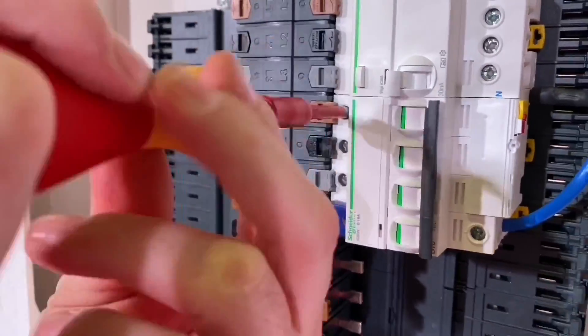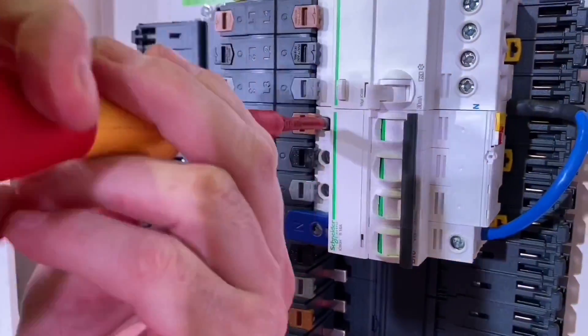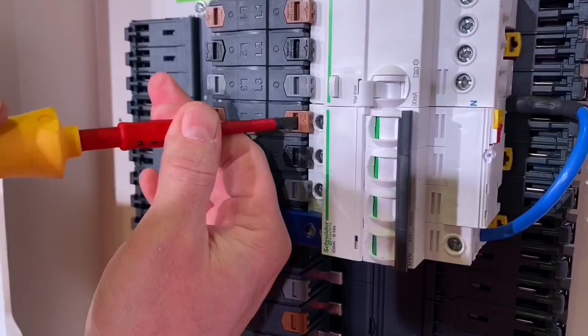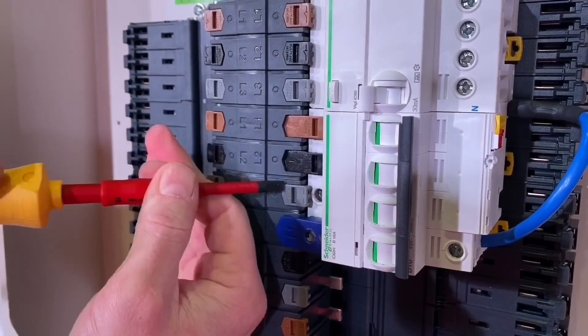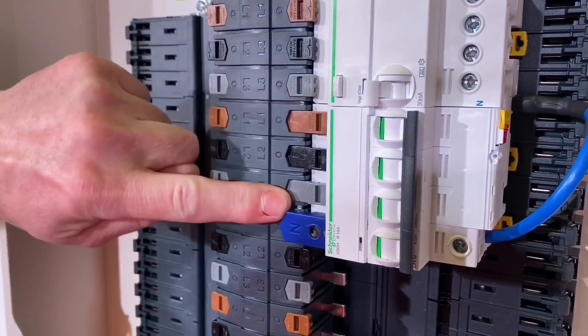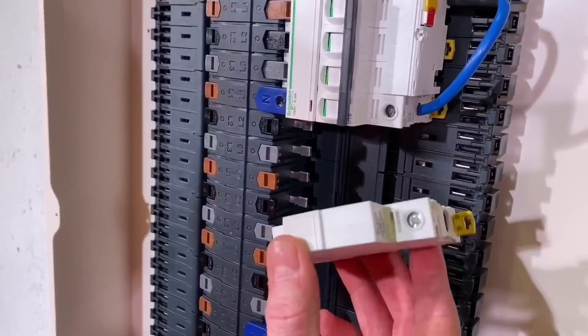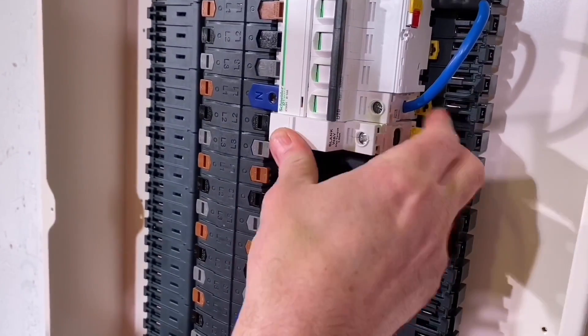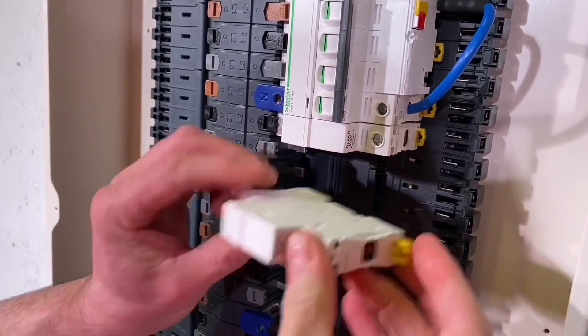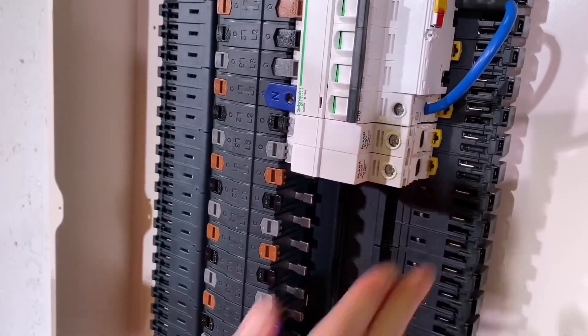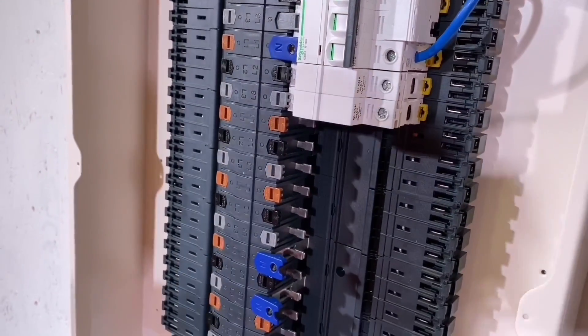That one's in as well and then just slide the Isobar tabs across, and then that would liven them up. A simple process and just complete that. I'm going to put some blanks in which is for future expansion.